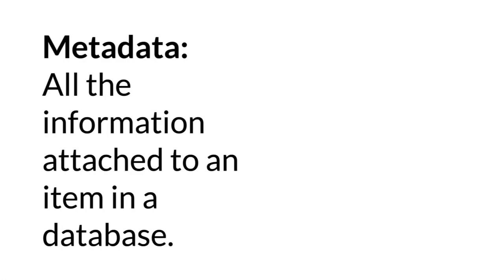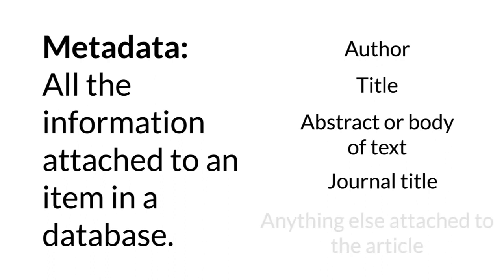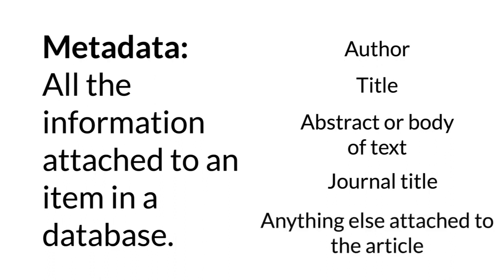The first concept you need to understand for keyword searching is metadata. Metadata is all of the information attached to an item in a database. For an article, this data includes things like author names, article titles, abstracts and article texts, journal title, and basically any other catalog information attached to an article.